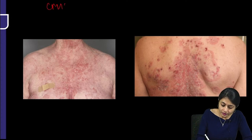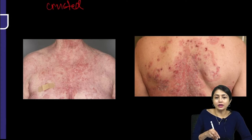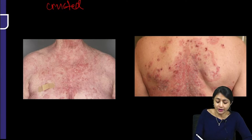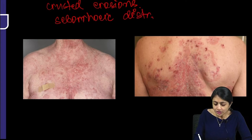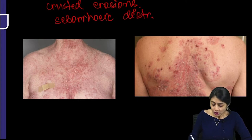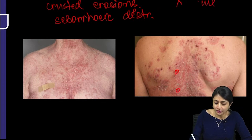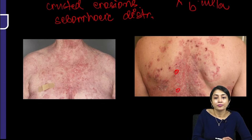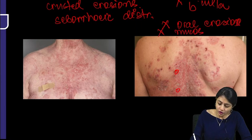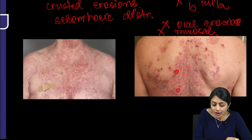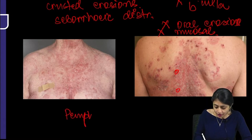In the similar spectrum, you have a 40-year-old male who has presented with crusted erosions in seborrheic distribution, as you can see here. You can see erosions but you hardly see any bulla here, and there is no mention of any mucosal involvement or oral erosions. So this is pemphigus foliaceous.